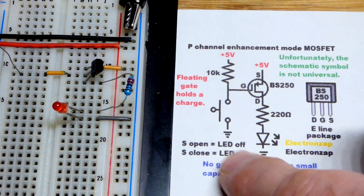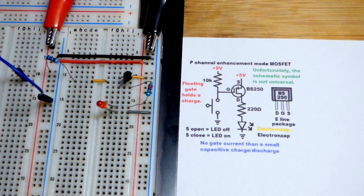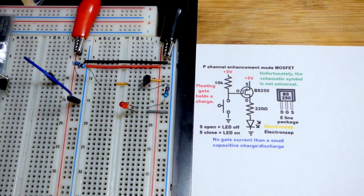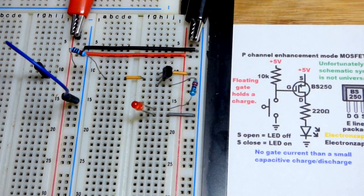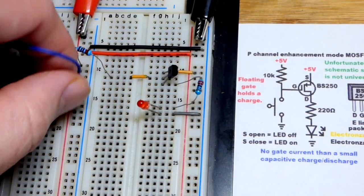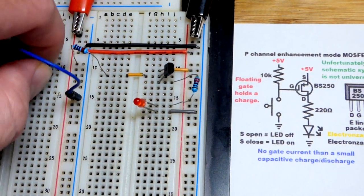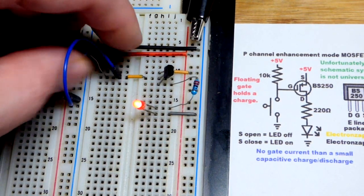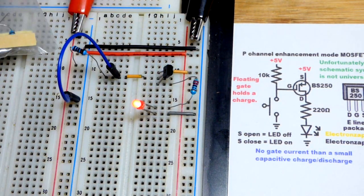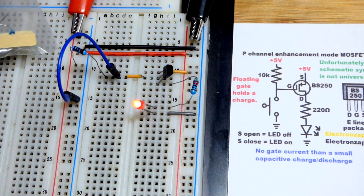So I have open switch there. That's when the LED is off, as you can see there. Instead of a mechanical switch, I just have this little jumper right here. And so right now it's to the negative supply right there. If I connect the negative supply to the gate, now the LED turns on.